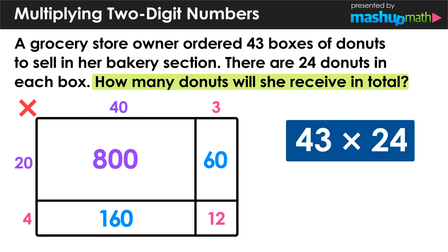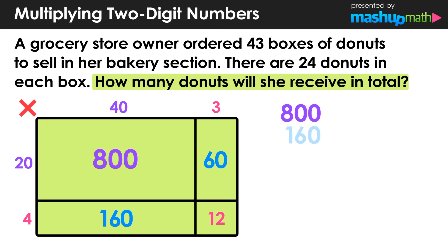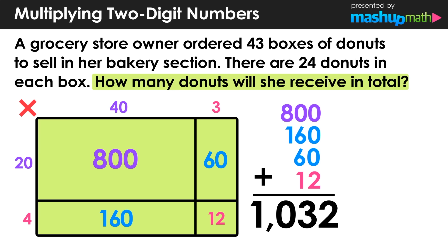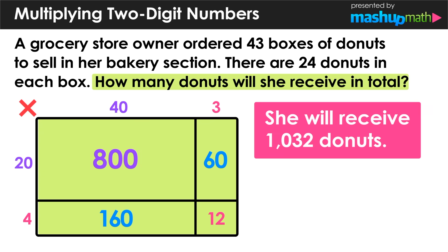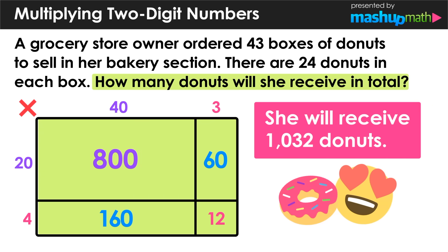Now that we have completed our area model, we can find the value of 43 multiplied by 24 by finding the sum of those four values inside the area model. We take 800, 160, 60, and 12 and add them all together to get a total of 1,032. So we can conclude that she will receive 1,032 donuts in total.